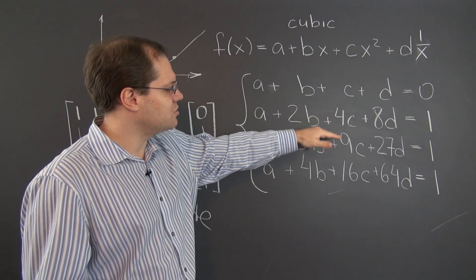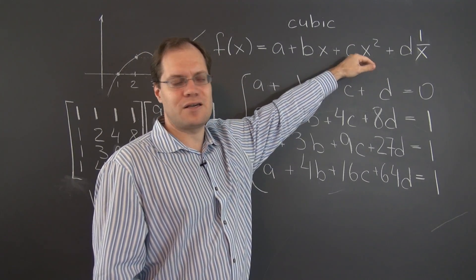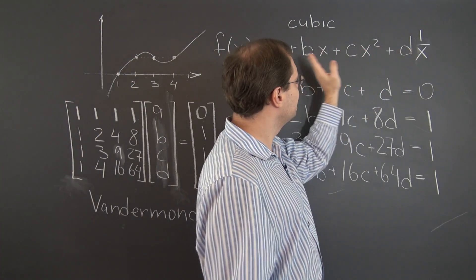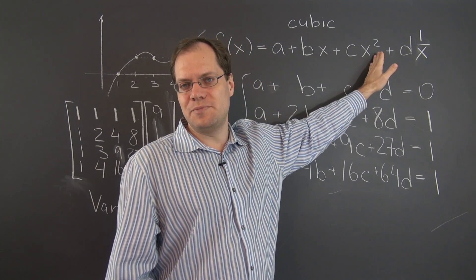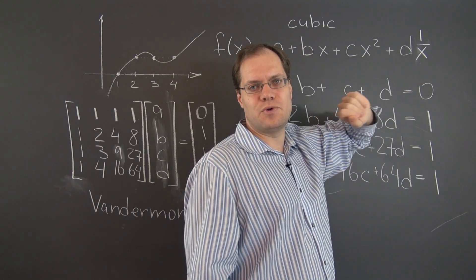Because now, in establishing these equations, we have to plug in 1, 2, 3, and 4 into this function. Plugging in 1, the first three coefficients will always be the same, but the remaining one, well, in this case, it's also the same. 1 over 1 is 1.